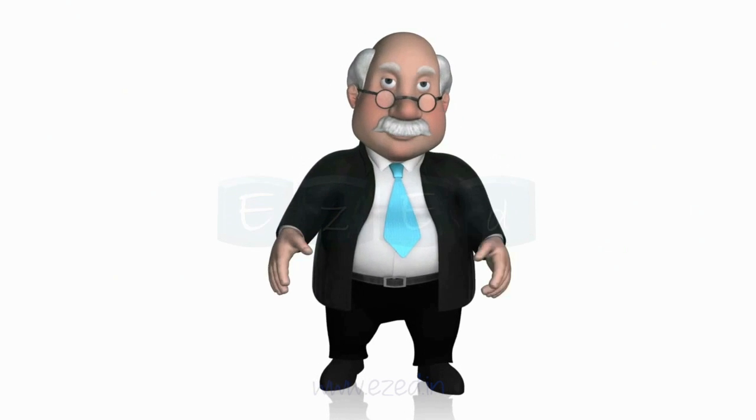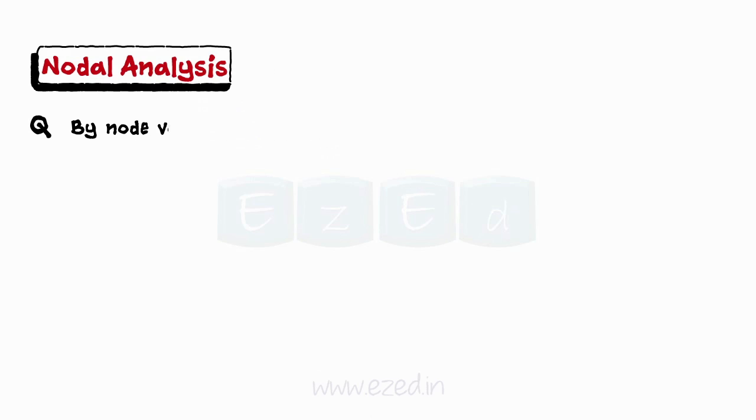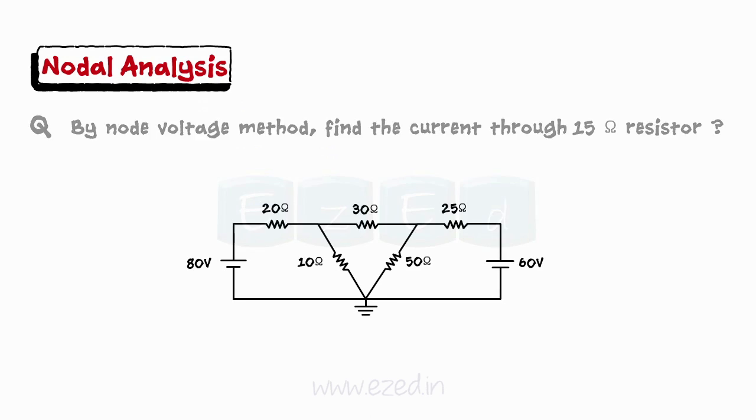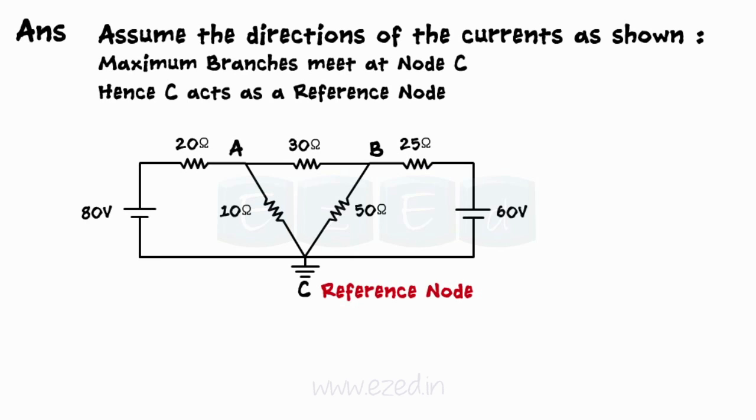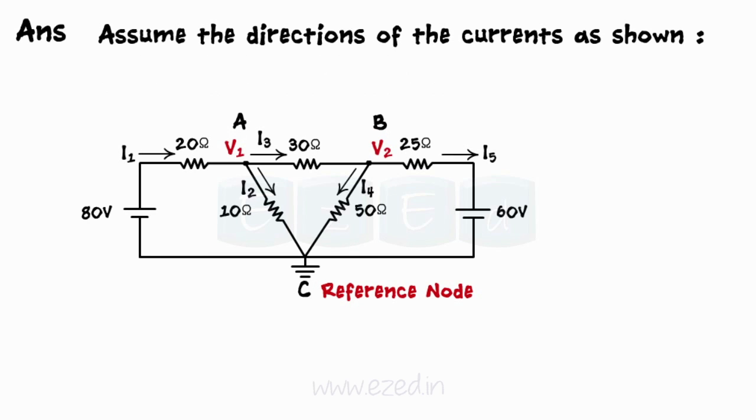By node voltage method, find the current through 15 Ohm resistor. We assign name to every node and assume one node where maximum branches meet as a reference node. So, here C acts as a reference node. Also, we assume the directions of the currents as shown.